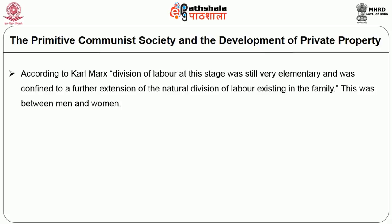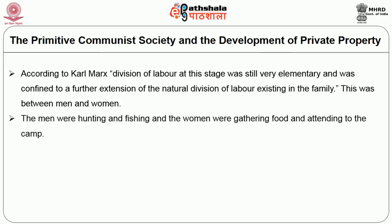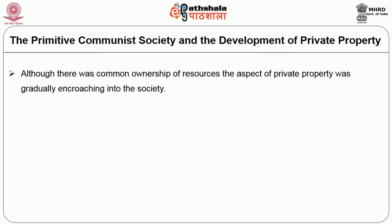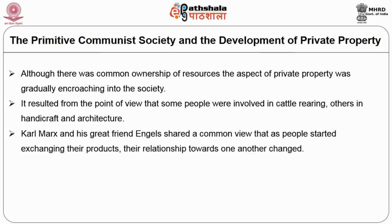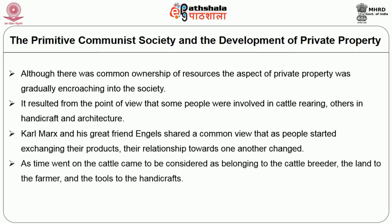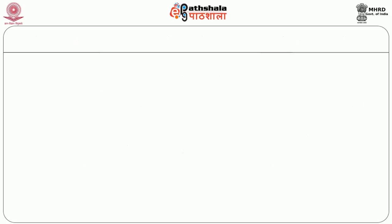According to Karl Marx, division of labour at this stage was still very elementary, confined to a further extension of the natural division existing in the family — between men and women. Men were hunting and fishing while women were gathering food or attending camp at home. There was some level of development, though very slow. Although there was common ownership of resources, private property was gradually encroaching into society. Some people got involved in cattle rearing, others in handicrafts and some in architecture. As Marx and Engels shared, as people started exchanging products, their relationships changed — cattle came to be considered as belonging to the cattle breeder, the land to the farmer, and tools to the handicraftsman.